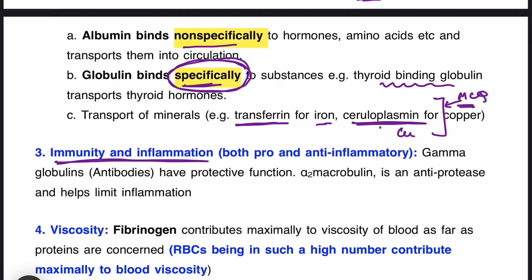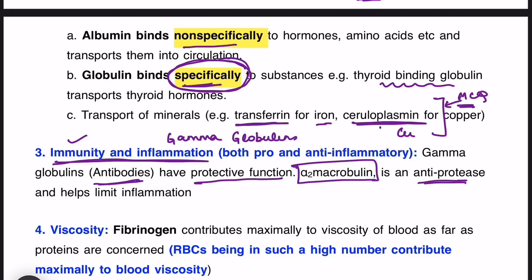The next function is immunity and inflammation. Gamma globulins are the immunoglobulins, produced by B lymphocytes — these are the antibodies with protective function. So plasma proteins are important for immunity. Another plasma protein is alpha-2 macroglobulin, which is an anti-protease. Protease is an enzyme that breaks down proteins, and alpha-2 macroglobulin limits inflammation. So there are both pro-inflammatory proteins like gamma globulins and anti-inflammatory proteins like alpha-2 macroglobulin.